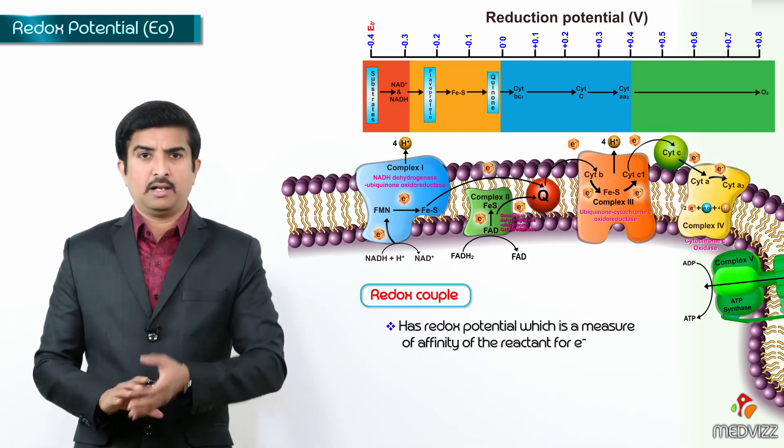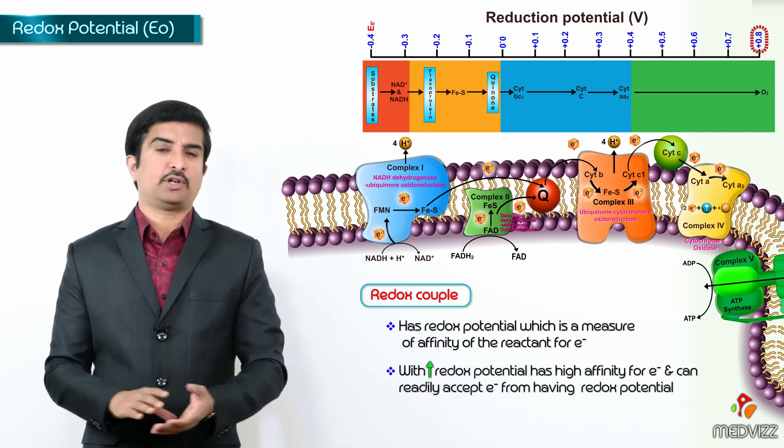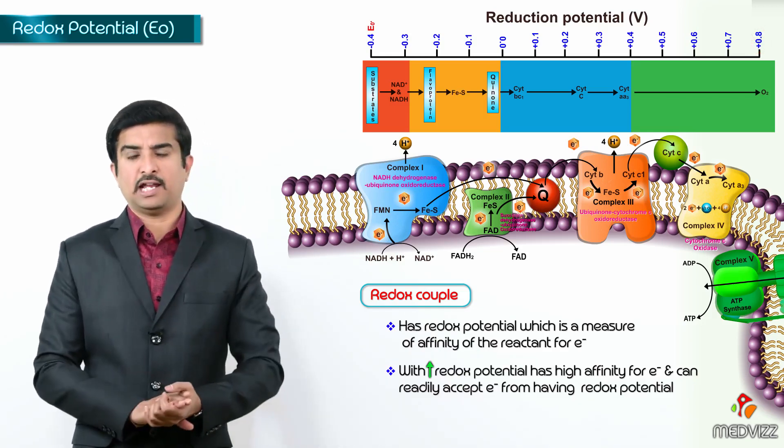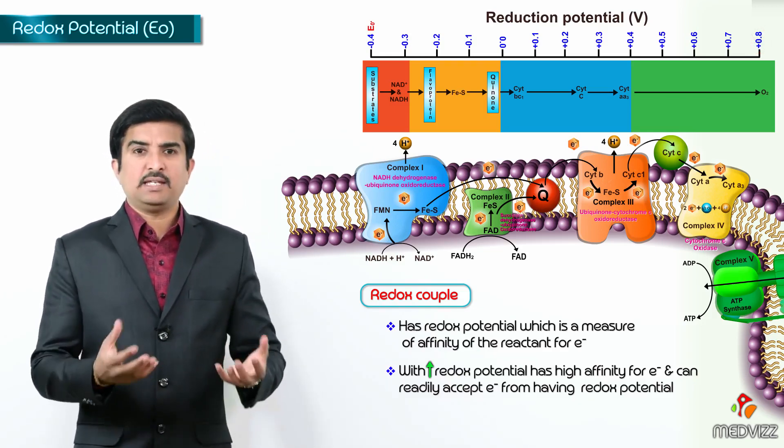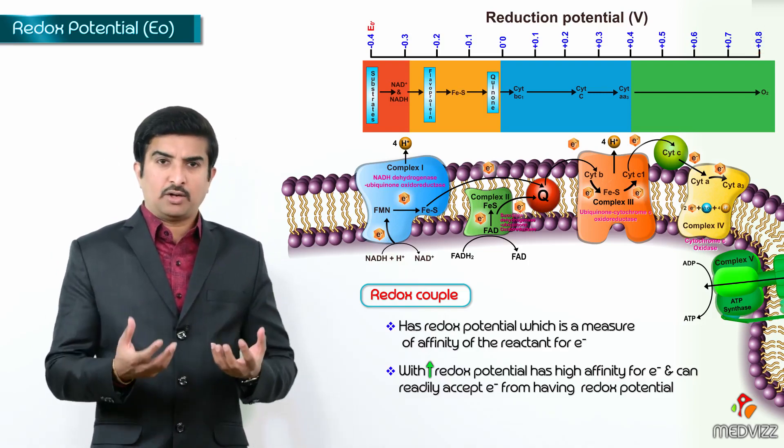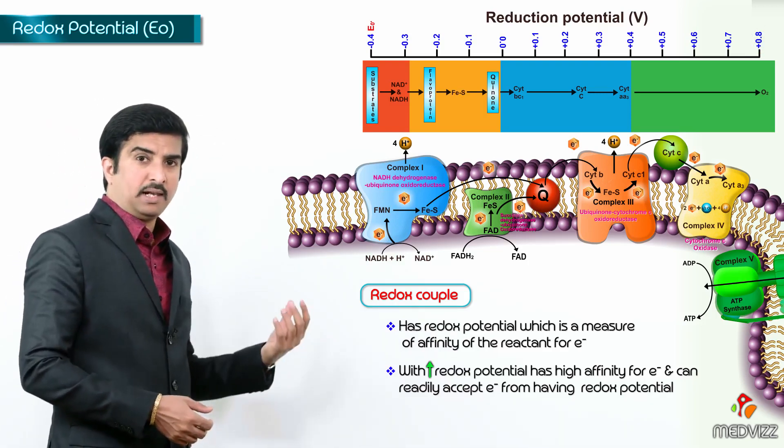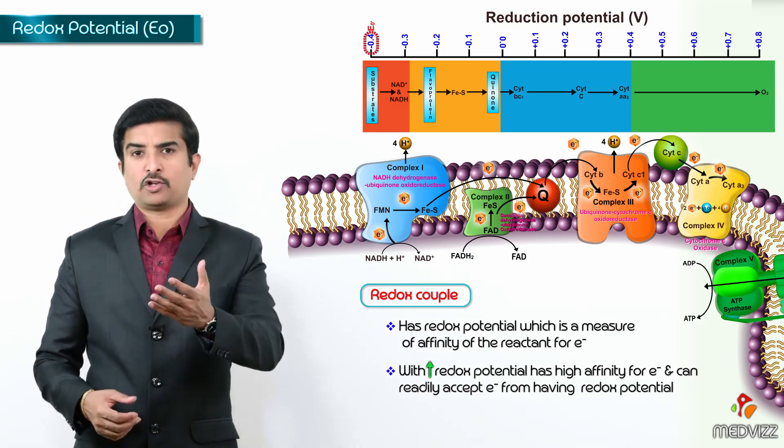A redox couple having a high redox potential has a very high affinity for the electrons. Which means that particular reactant can readily accept electron from a redox couple having lower redox potential.